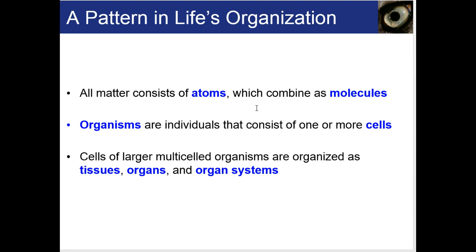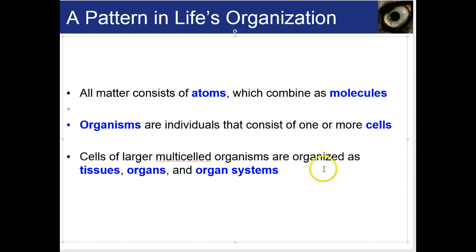To go up to the next level, you combine atoms into molecules. Molecules then make up the next level, called macromolecules. Life is made out of about four main macromolecules: proteins, carbohydrates, lipids, and nucleic acids. Macromolecule simply means big molecule. Macromolecules then make up cells, where we see the beginnings of life.